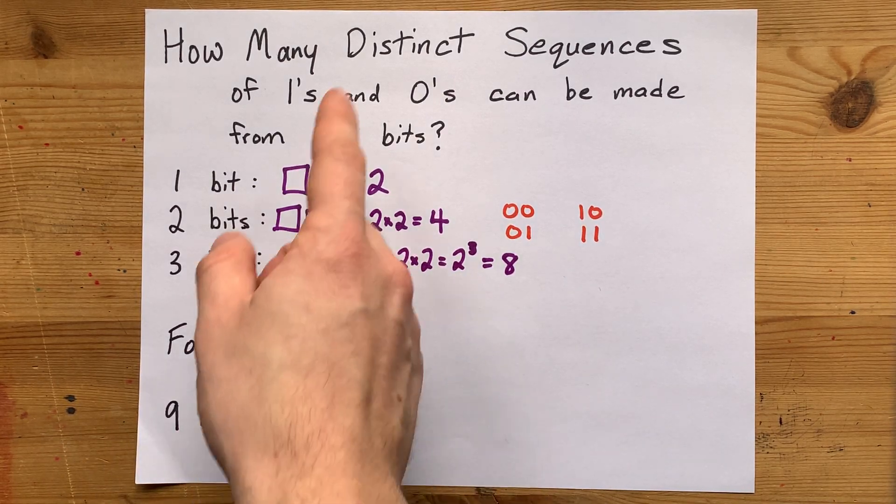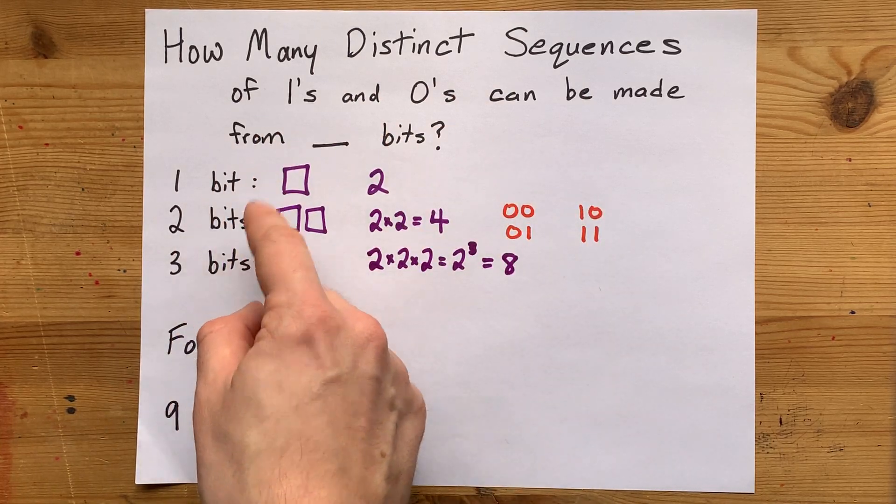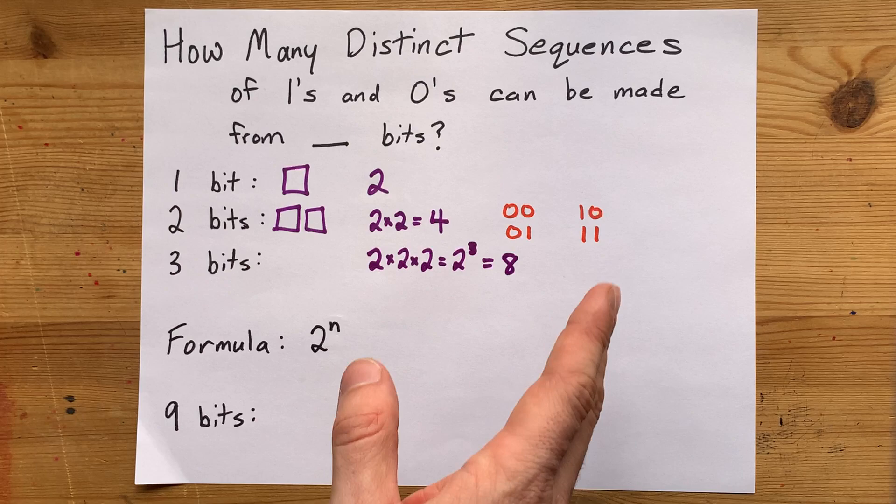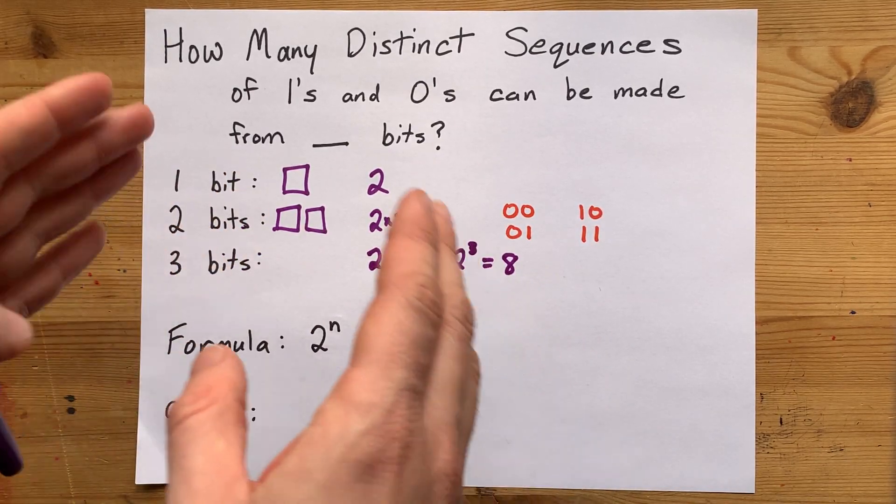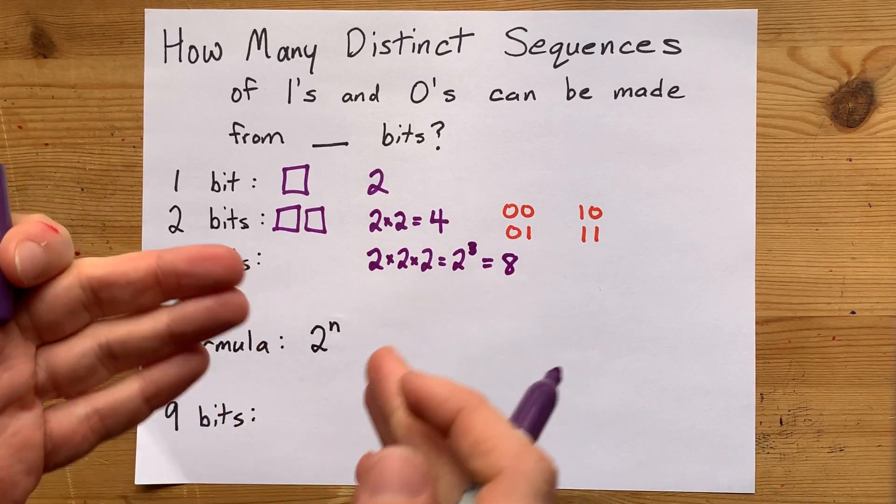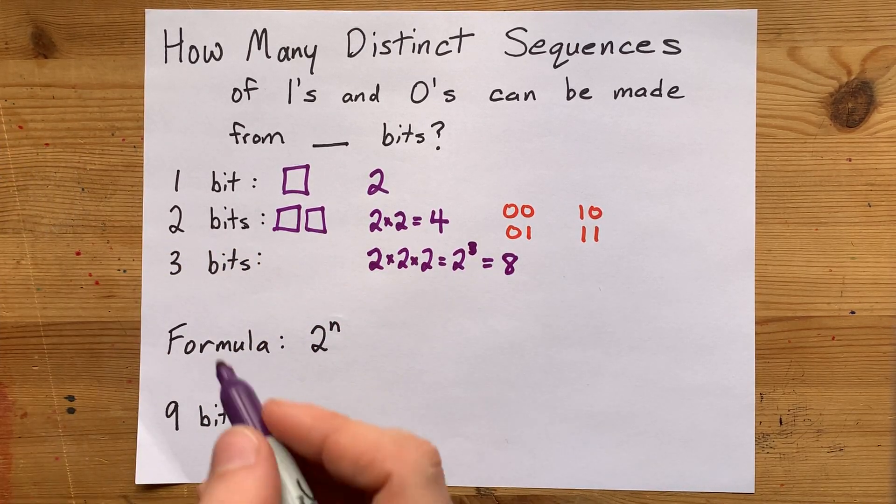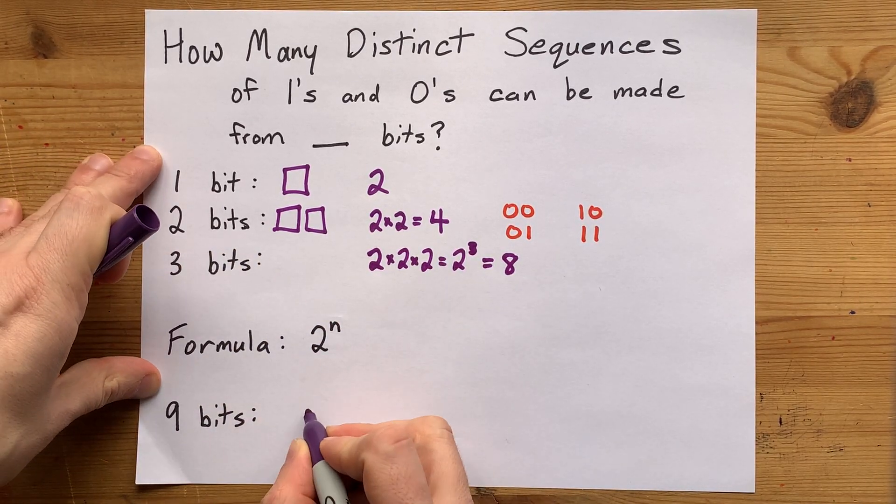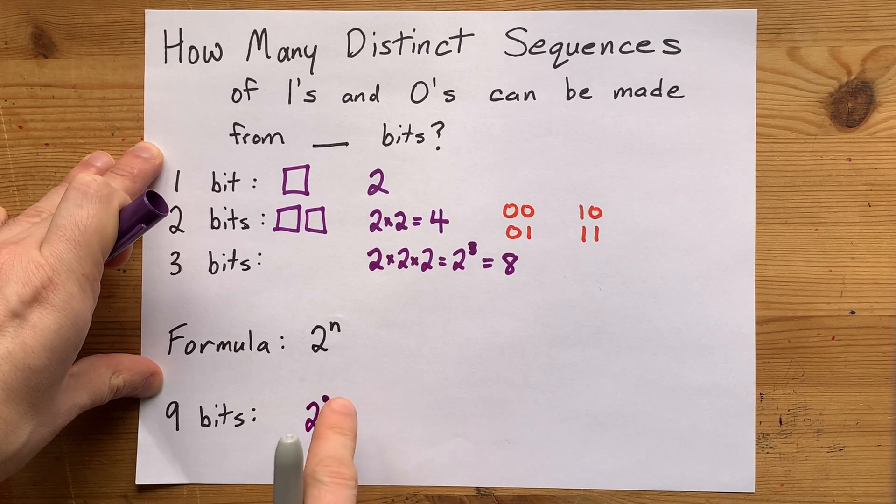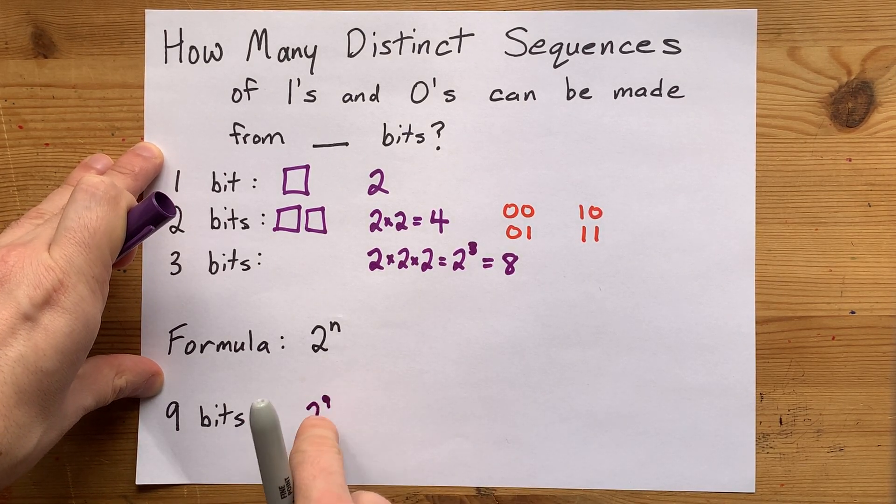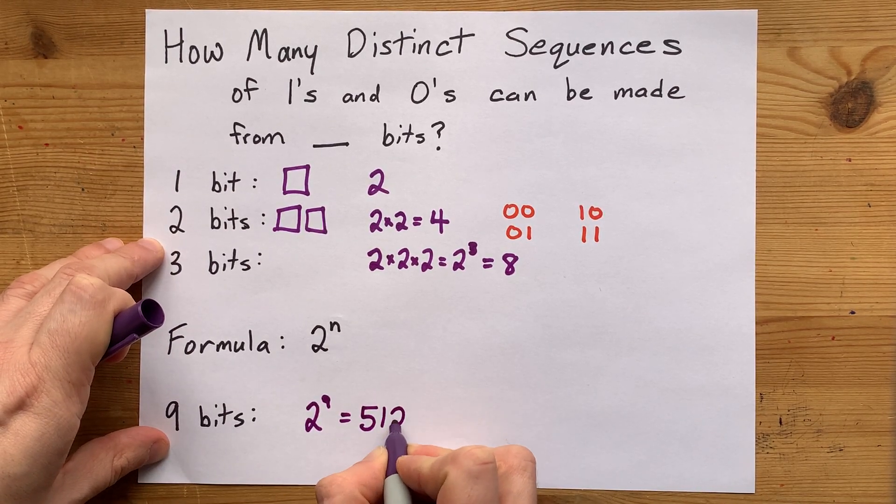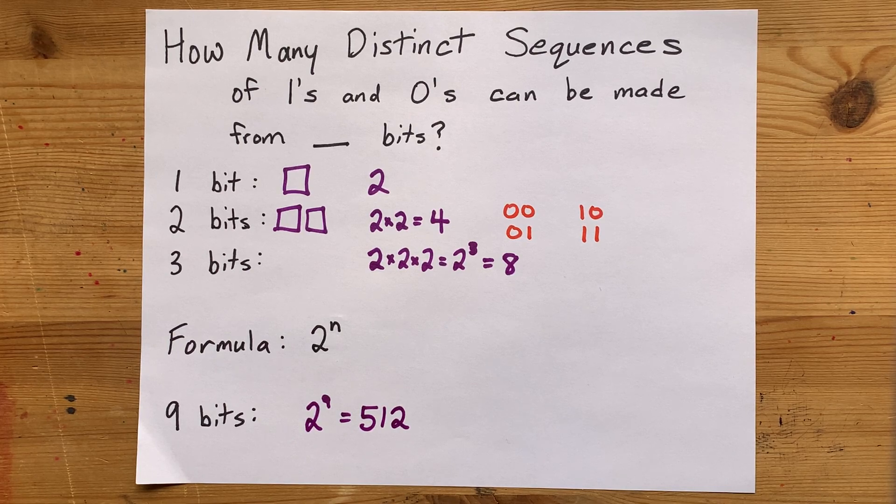If you Google how many distinct sequences of 1s and 0s can be made from 9 bits, the Google snippet actually tells you the wrong answer. It brings up a Stack Overflow post where someone says one thing, but they're wrong. The answer is: for 9 bits, there are two options for each of those 9 bits, so you're multiplying two by itself nine times. That gives 512 distinct ways to do it.